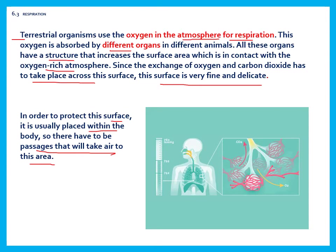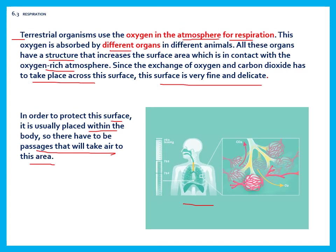Terrestrial animals have special organs that are very soft and delicate, and these are protected inside the body. In human beings, the lungs are inside the rib cage. There is also a trachea, which is the windpipe. The magnified image of the lungs shows the alveoli, where the gases are exchanged.